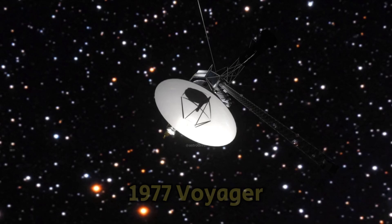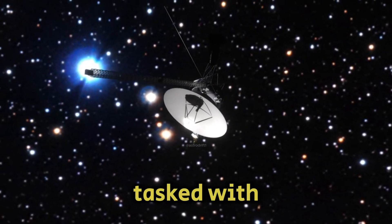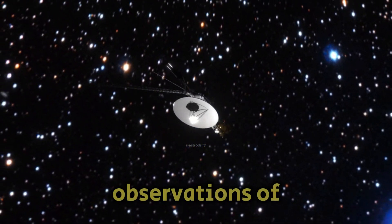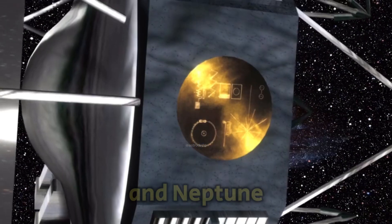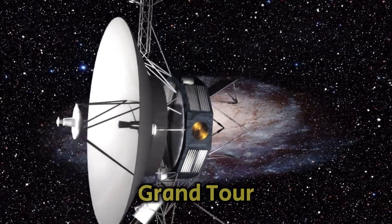Launched in 1977, Voyager 1 and Voyager 2 were initially tasked with exploring Jupiter and Saturn. However, they went on to make groundbreaking close-up observations of Uranus in 1986 and Neptune in 1989, earning the mission the name Voyager Grand Tour.